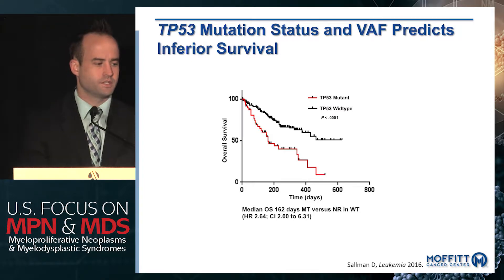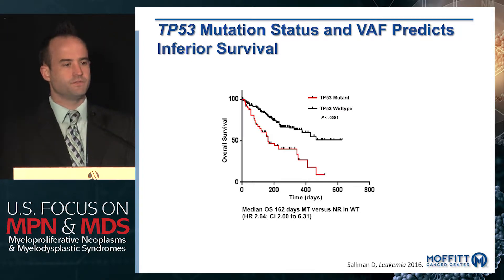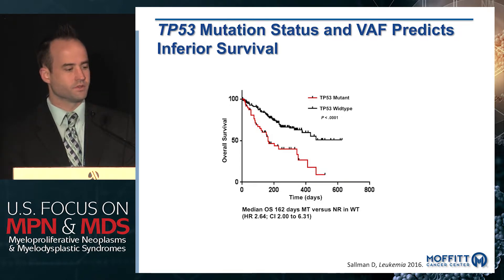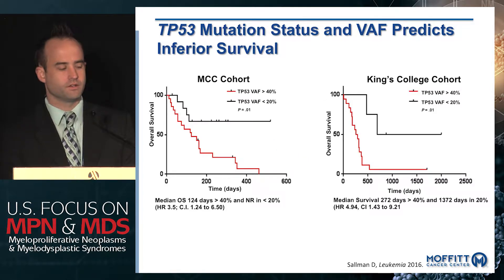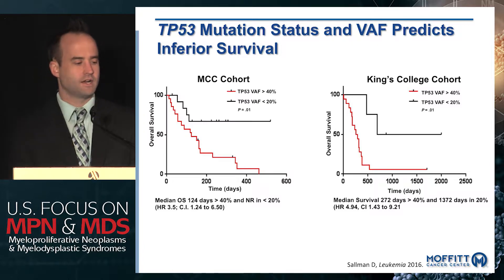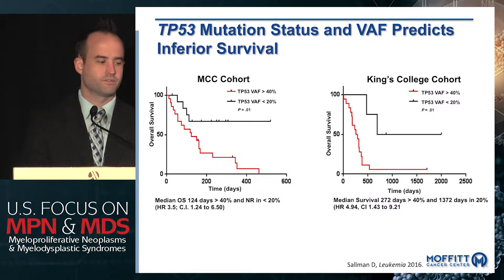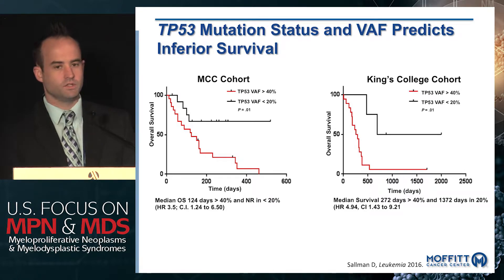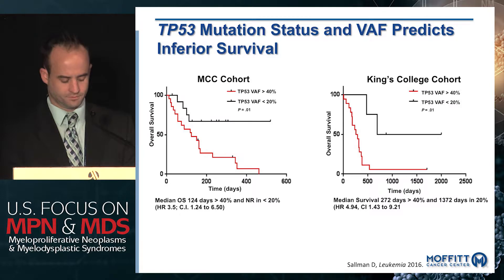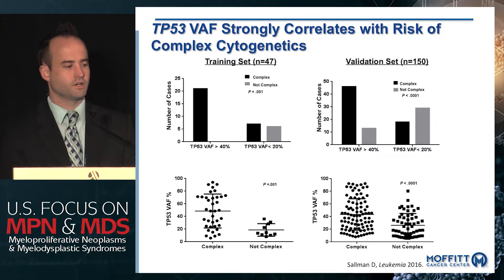If patients did not have p53 and had only three or four abnormalities, their median overall survival in this large cohort was 34 months. Looking at p53 in detail with respect to clonal burden, the presence of p53 mutation predicts for poor outcomes, but stratifying by higher versus lower allele burden — validated in both a Moffitt Cancer Center cohort and a King's College validation cohort — patients with a higher VAF had significantly worse outcomes, with long-term survivors predominantly having an allele burden less than 20%.